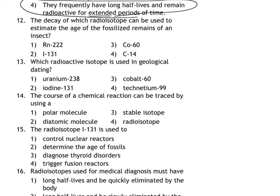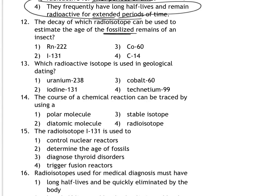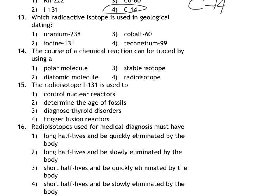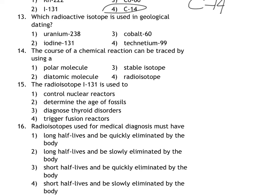Number 12. The decay of which radioisotope can be used to estimate the age of the fossilized remains of an insect? So that's the key word there, fossilized remains of an insect, that means that it was a living or a once-living thing which means that it is made of carbon. And some carbons are carbon-14. Most of them are carbon-12 but some are carbon-14. And carbon-14 is really useful in dating organic remains like this insect, this fossilized insect. So carbon-14 is my answer. Which radioactive isotope is used in geological dating? So geology makes you think about rocks and stuff like that. And the best radioisotope for measuring decay in rocks is uranium-238. I like to think that 238 is to date.